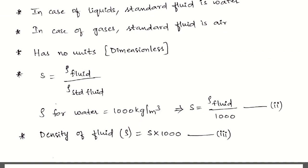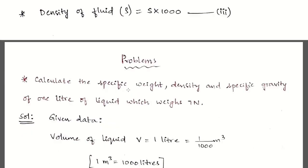What is the specific gravity of water? Using S = density of fluid / 1000, substituting water's density: S = 1000 / 1000 = 1. So specific gravity of water is 1. Another important liquid used in the laboratory alongside water is mercury, whose specific gravity is 13.6. Please remember these values.